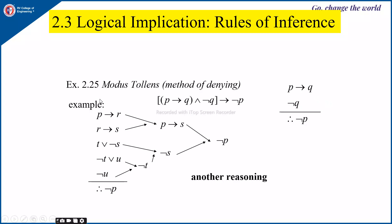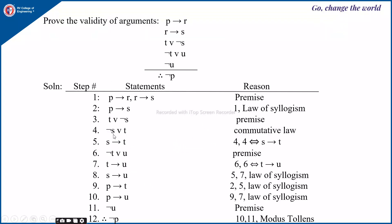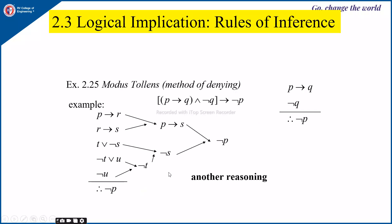Let us see another way of reasoning the same example. If P implies R and R implies S, we get P implies S by the law of syllogism. From not of T or U we get not of T. Using not of T and T or not of S, we get not of S. Then using P implies S and not of S, we conclude not of P. Order does not matter — you just have to arrive at the conclusion to prove the validity of the argument.